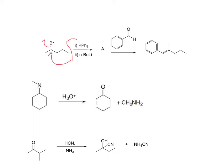The bromine is going to leave, and to keep my carbons consistent I'll number them: one, two, three, four, and five, with PPh3 carrying a positive charge. As we discussed in class, the positive charge on phosphorus is not very stable and it would want to get rid of that positive charge.